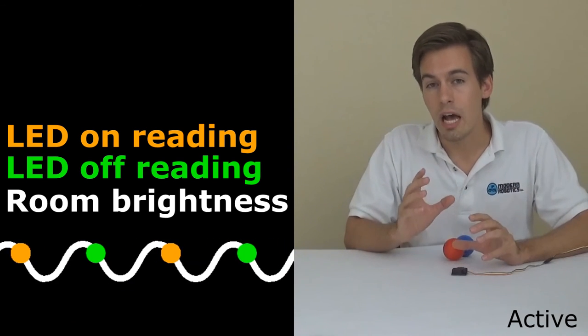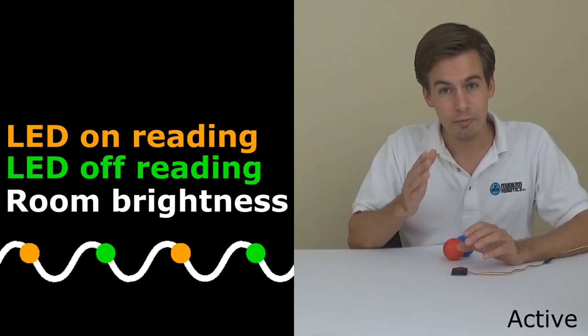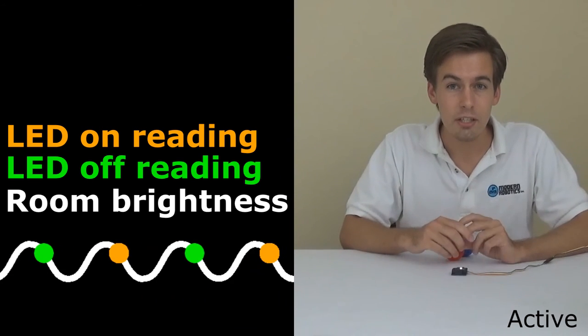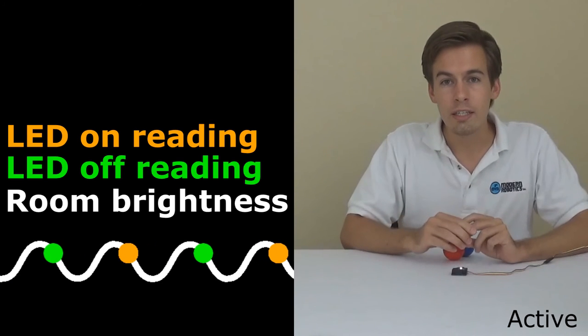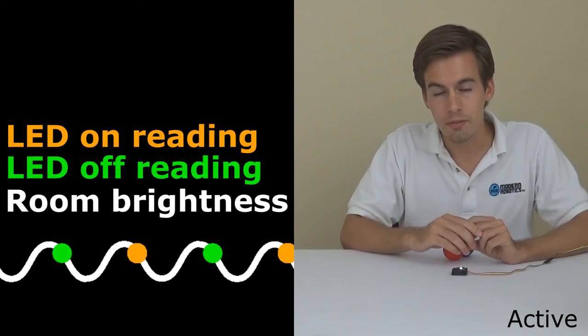So if we tell a color sensor I'm in a 50 hertz country, it'll measure at 50 hertz and it'll always be in the same spot. Or if we're in a 60 hertz country, we tell it, hey, run at 60 hertz and always measure that same spot.